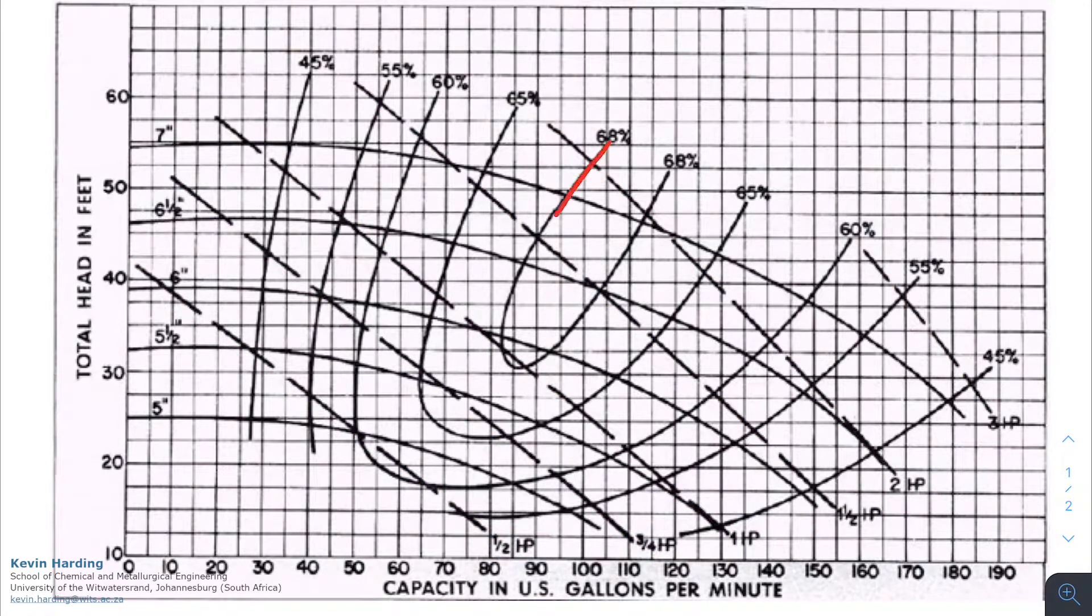The last thing we can get on this diagram are these U shapes here which is the efficiency. So when we've bought our pump and we're trying to operate it, depending on what operating point we're in, we will be able to work out what efficiency.